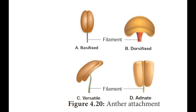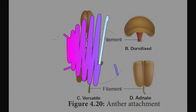Based on anther attachment, the androecium is classified into four types: Basifixed (innate) — the base of the anther is attached to the tip of the filament, example: Datura; Dorsifixed — the apex of the filament is attached to the dorsal side of the anther, example: Hibiscus; Versatile — the filament is attached to the midpoint of the anther, which swings at the point of attachment, seen in grasses; and Adnate — the filament runs continuously from the base to the apex of the anther, example: Nelumbo.